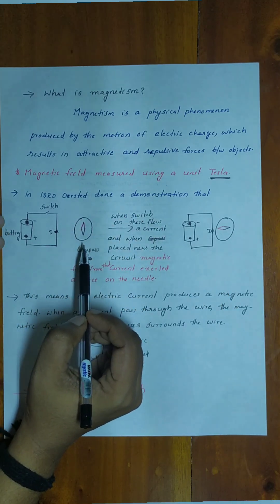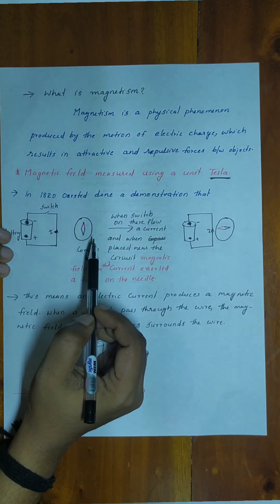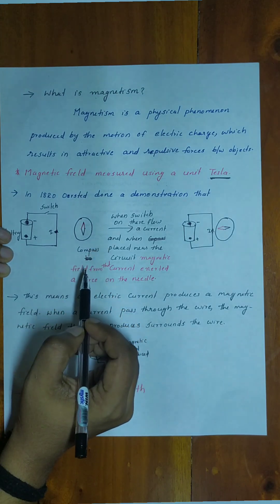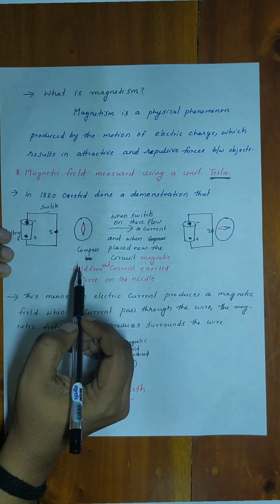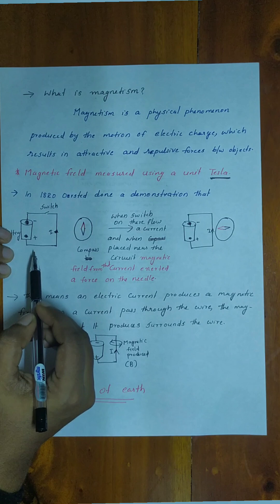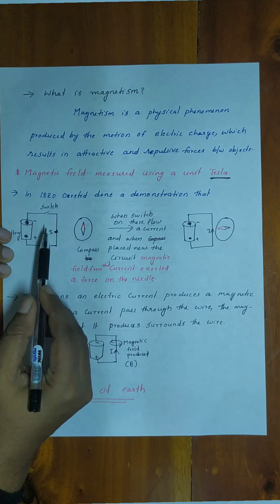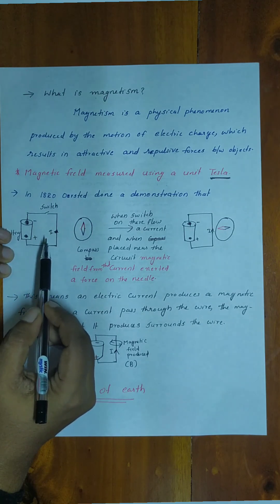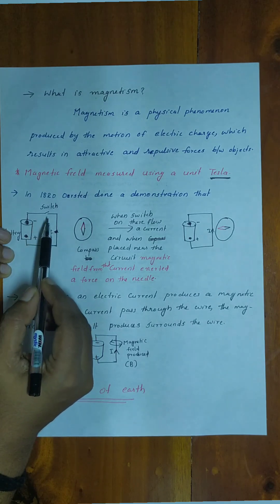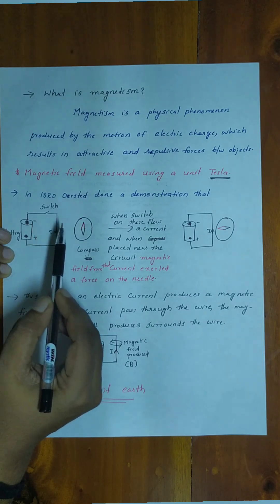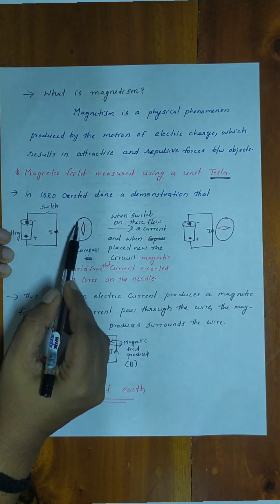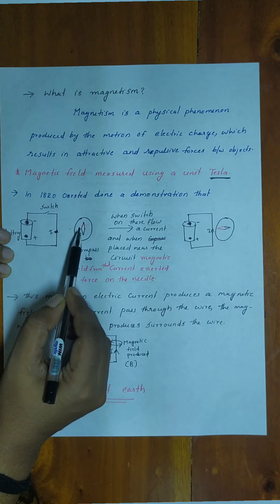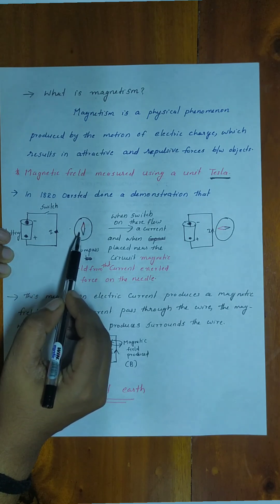A professor did a demonstration experiment. There is a circuit and a current flow. When the current is switched on in the circuit, the magnetic needle deflects to a certain angle and position.